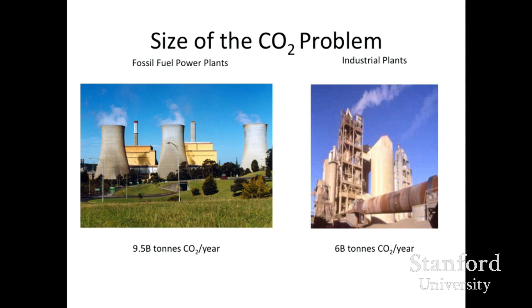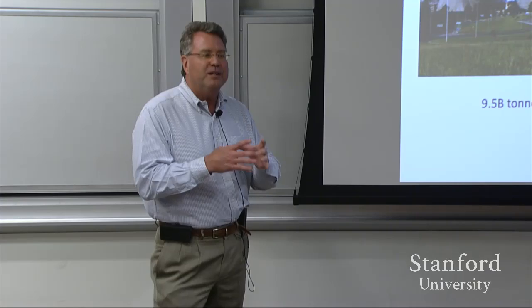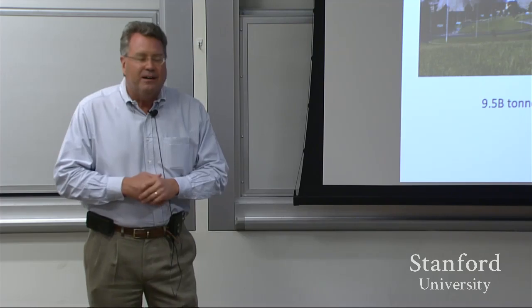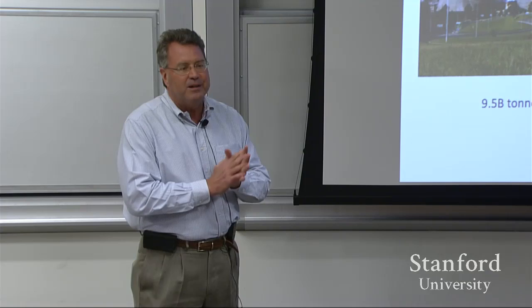How big is the problem? Humans are putting out about 30 billion tons of CO2. About 10 comes from electrical power generation, mostly coal plants. Another six comes from industrial plants, mainly cement plants. These are point sources where you can actually trap the CO2. We can't do that with cars—they're just tailpipes.